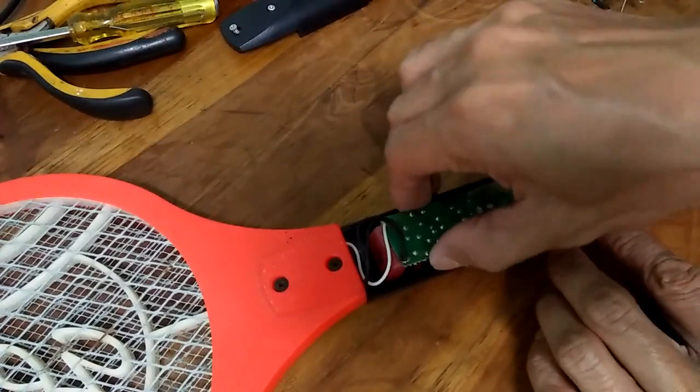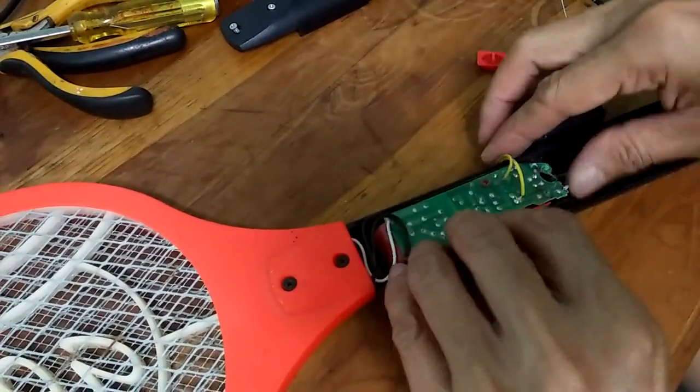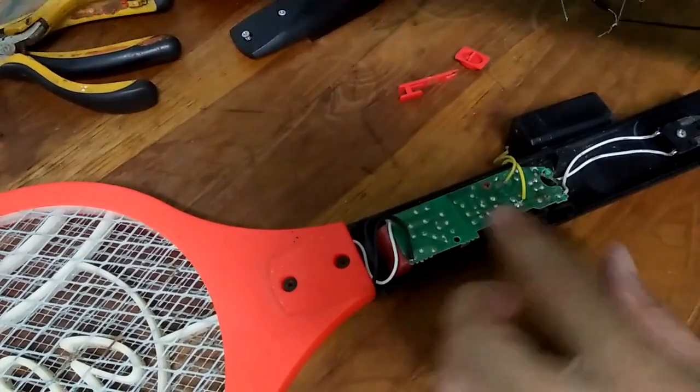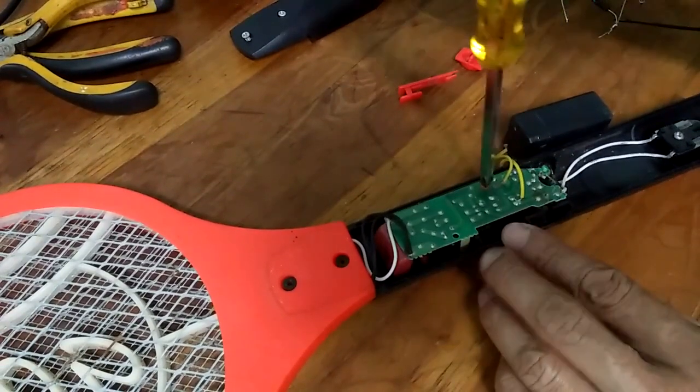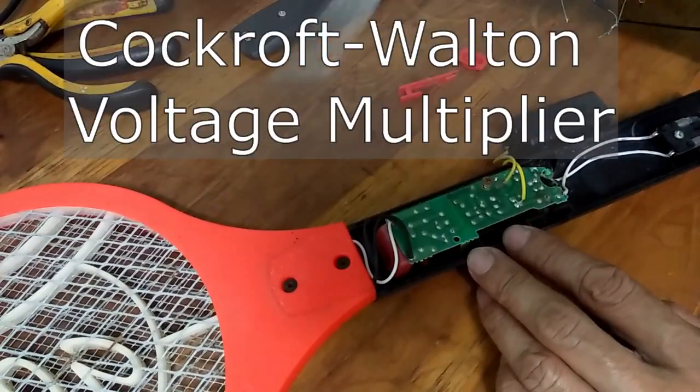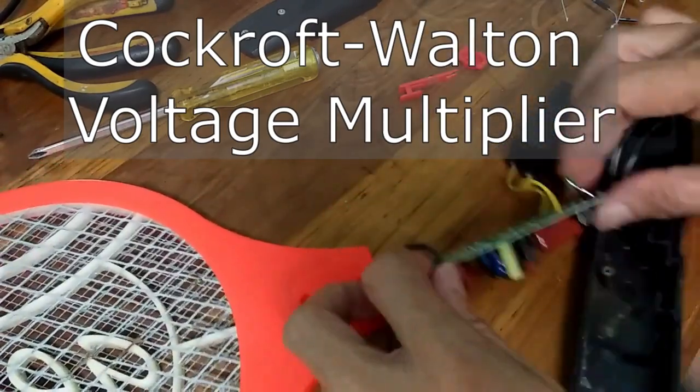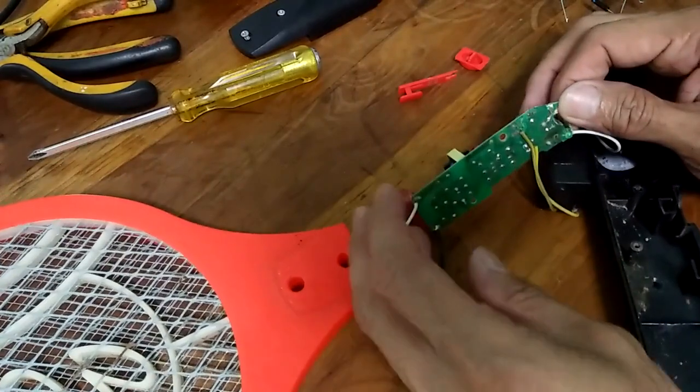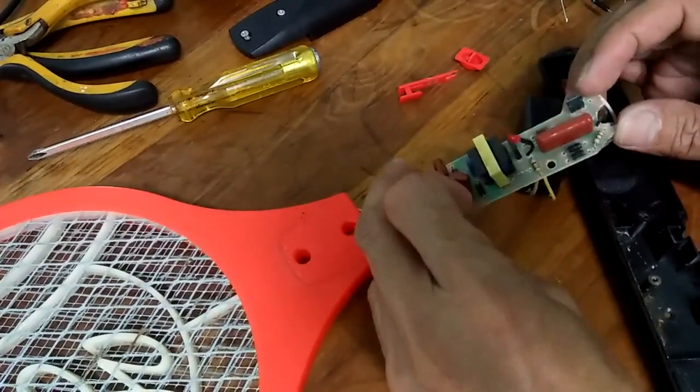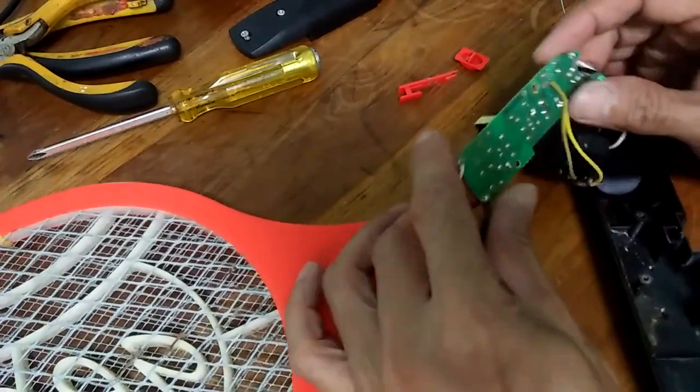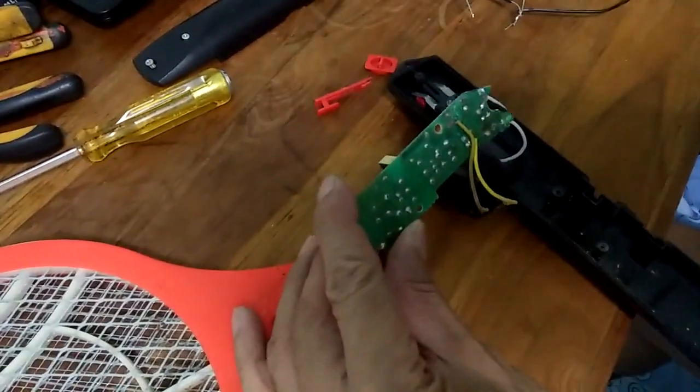Initially, I experimented with this discarded mosquito racket and I am after the circuit board. With that, I will pair it to a Cockcroft Walton voltage multiplier. I am only using the step-up transformer and the oscillator circuit, so I removed all the other components.